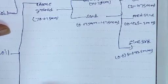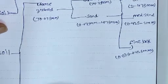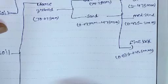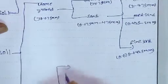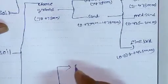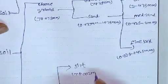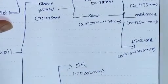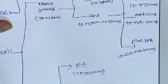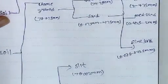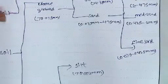Fine-grained soil means more than 50 percent of soil passes through 0.075 mm. Fine-grained soil is further divided into silt and clay. Silt is when soil particles are greater than 0.002 mm, and clay is when soil particles are less than 0.002 mm.